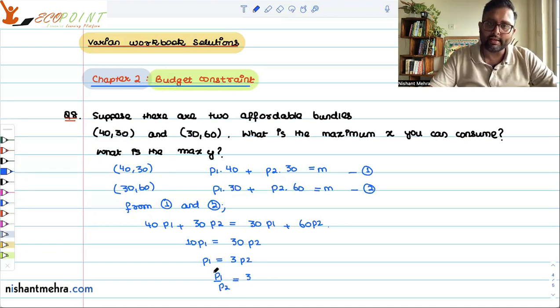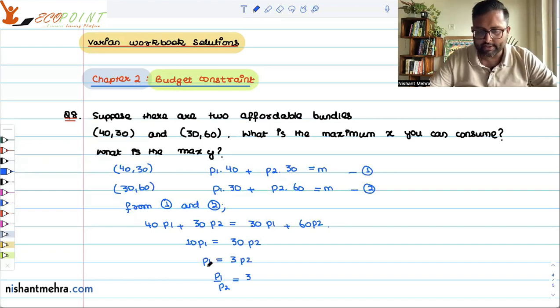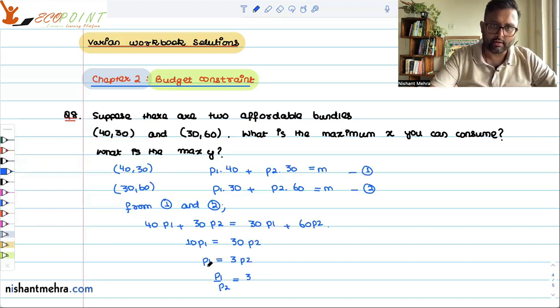So the slope of the budget line is 3, and this is a downward sloping line.